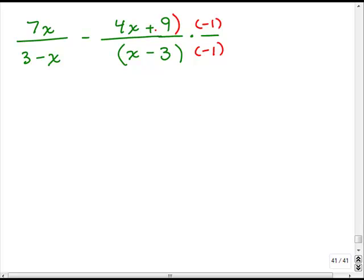Now, remember, this is a whole quantity on top here, right? So, what do I have? In my first fraction, I just have 7x over 3 minus x. And, in my second fraction, when I do x minus 3 times negative 1, that's also going to be 3 minus x. This is just giving me the same denominator.